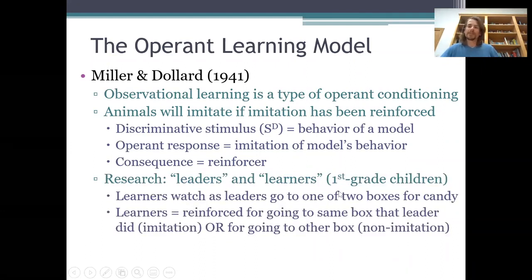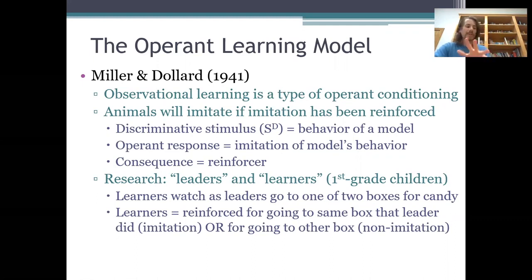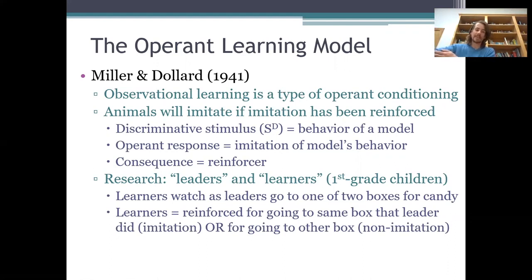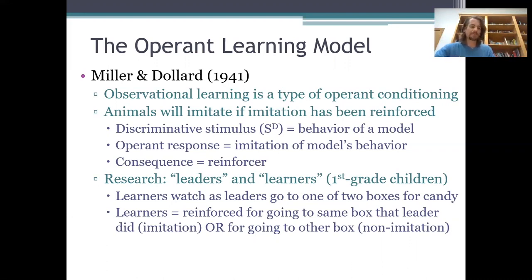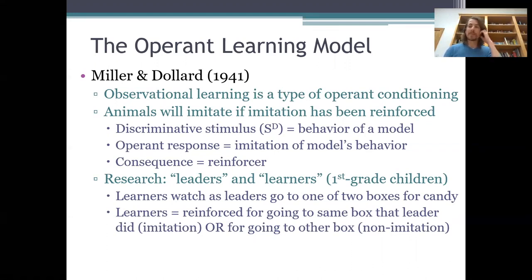In their experiments, Miller and Dollard tested first-grade children in pairs. In each pair, one child would be designated as the leader and the other as the learner. The kids would enter a room where there'd be two big chairs with boxes on them. On each trial, the leader would go and look in one of the boxes where they might or might not find candy inside. The leader would choose first and would be told in advance by the experimenters which box to look in. The learner could see which box the leader went to, but not whether the leader got reinforced with candy. Then after observing what the leader did, the learner would get to choose one of the boxes themselves and would either get candy or not depending on which choice they made.